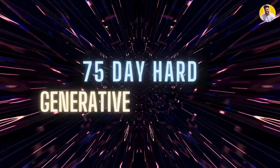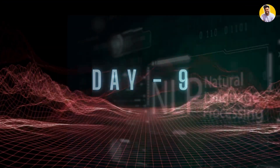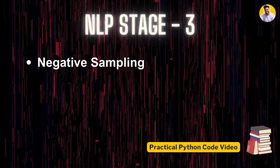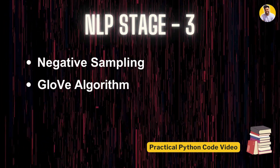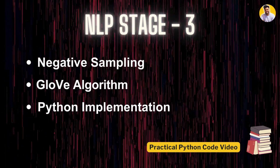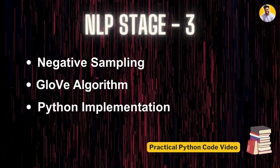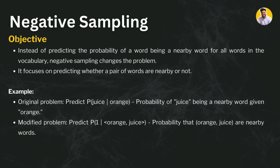Hello guys and welcome to Free Birds 2 and welcome to the 75 Day Hard Generative AI Learning Challenge. This is Day 9. In this video I will tell you about an NLP technique called negative sampling. We discussed word embeddings in our last video, so in this video we'll talk about negative sampling, which is the upgraded version of that, along with the GloVe algorithm and their Python implementations.